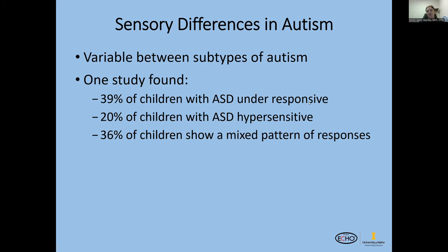Sensory responses just vary. There's a survey that compared people with autism to neurotypical individuals across different sensory areas — it was really interesting to see where one group was more sensitive than the other. If you're interested in that, I found it informative. On the next topic, we'll talk more about how OTs assess sensory differences.